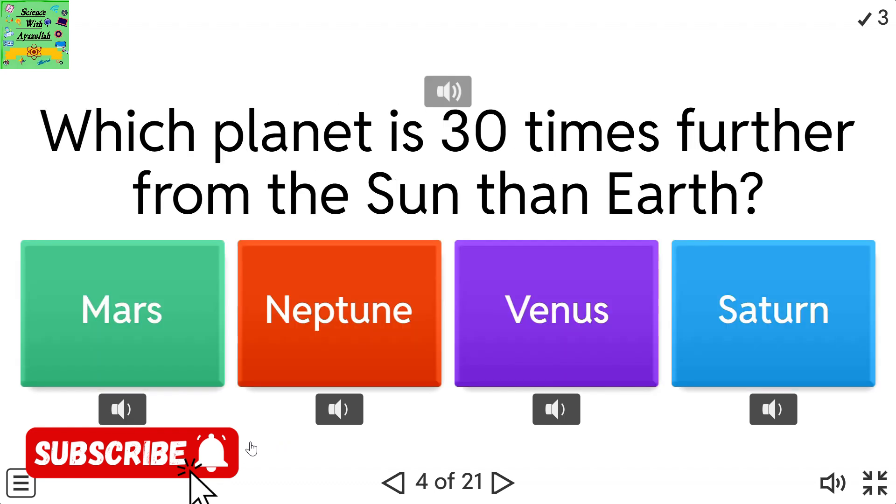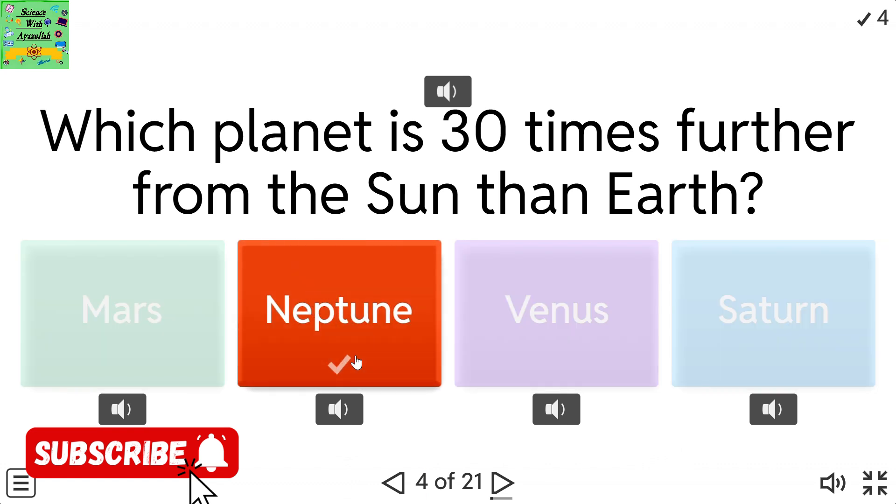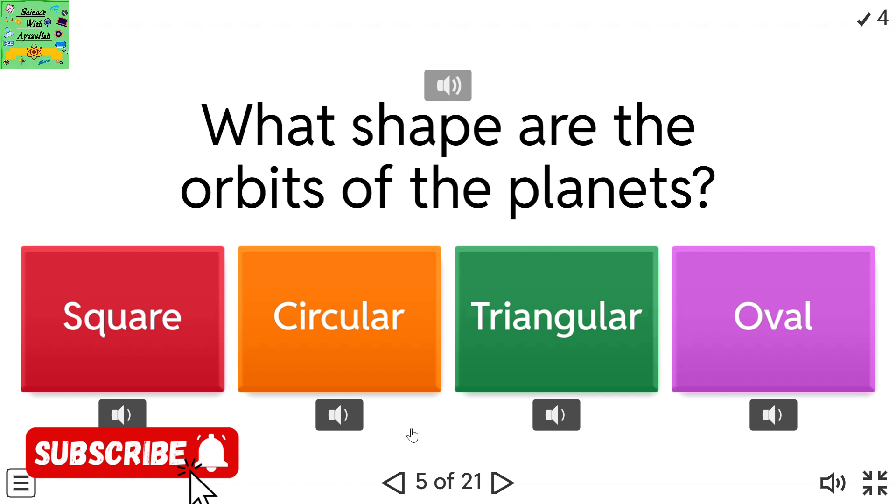Which planet is 30 times further from the Sun than Earth? Mars, Neptune, Venus, Saturn. What shape are the orbits of the planets? Square, circular, triangular, oval.